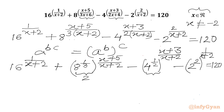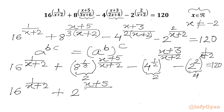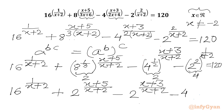Now 4 power (1/2) is 2, and 4 power (1/2) is 2. So I can write 16 power (1 over x+2) plus 2 power ((x+5) over (x+2)) minus 4 power (1 over x+2) equals to 120.